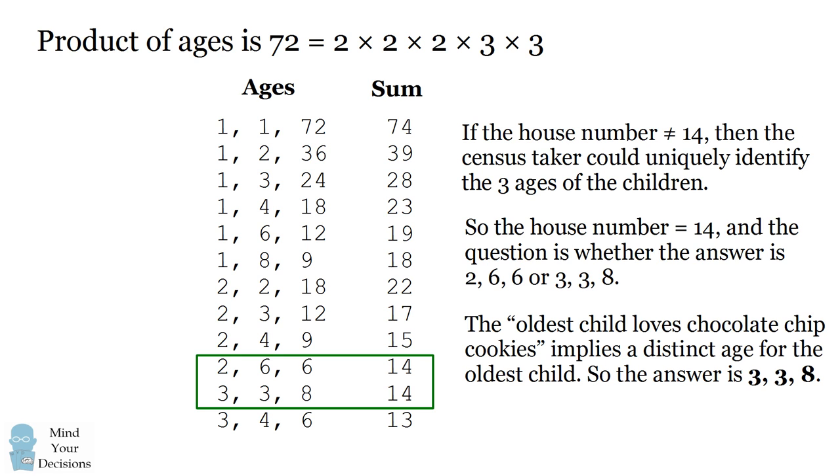And this is where the detail that the oldest child loves chocolate chip cookies comes into play. The oldest child implies there's one child who has a distinct age that's the oldest child. So we can rule out the possibility of 2, 6, and 6, and that means the answer is 3, 3, and 8. Did you figure it out?